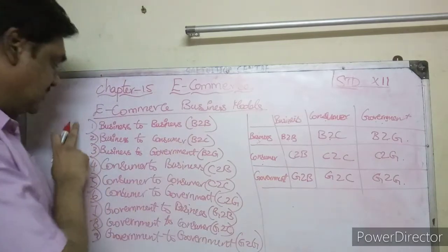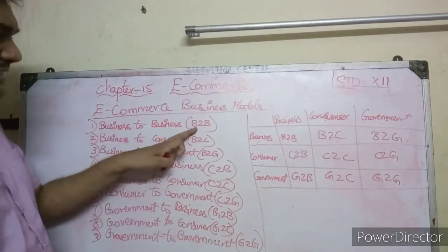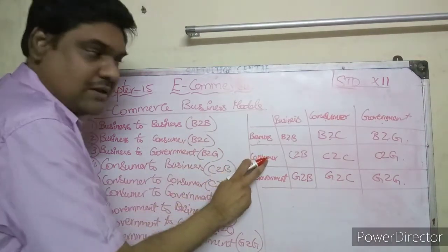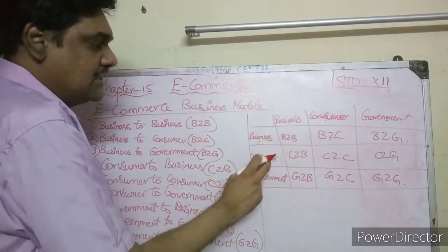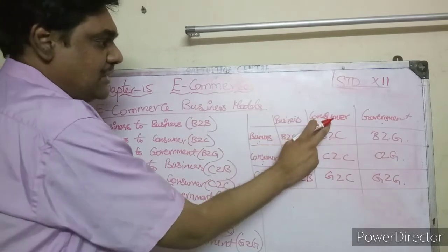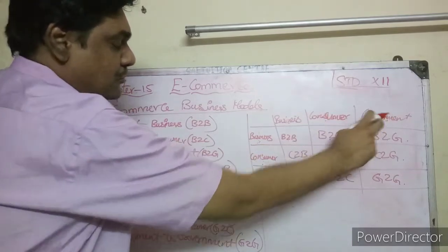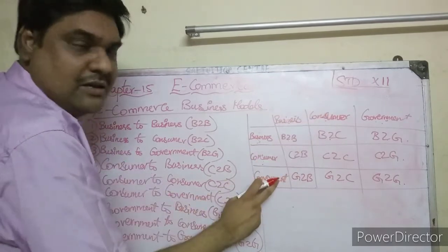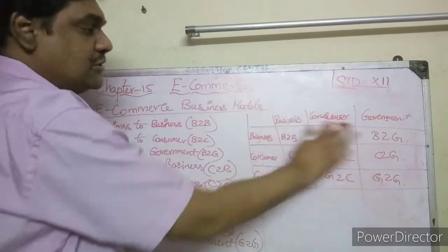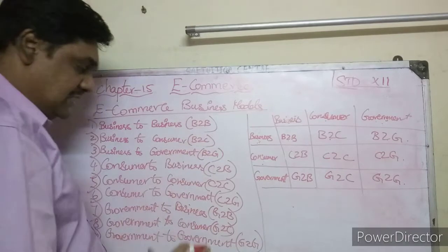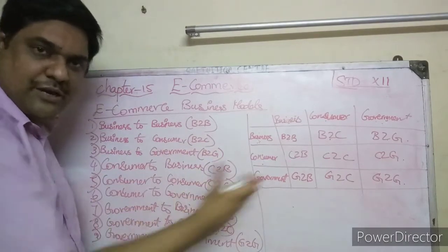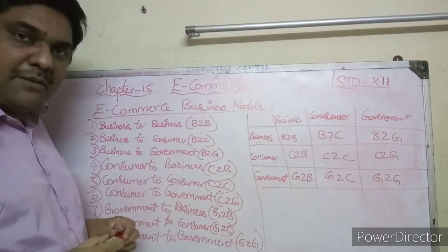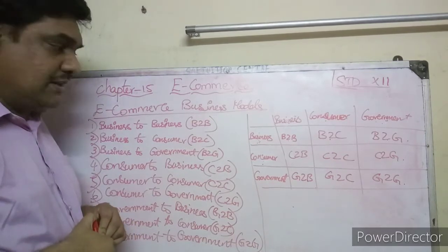So to understand: the first three are business to business, business to consumer, business to government. The next three: consumer to business, consumer to consumer, consumer to government. Then: government to business, government to consumer, government to government. Using a table, you can write all nine models clearly.